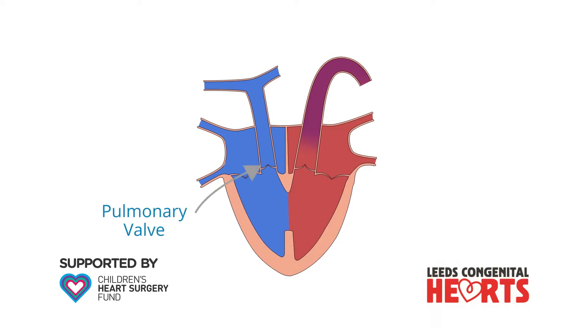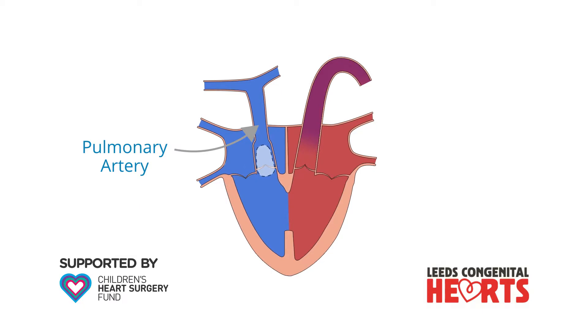The pulmonary valve and pulmonary artery may need to be enlarged, and this is achieved by sewing in a patch of material over the valve and into the pulmonary artery.